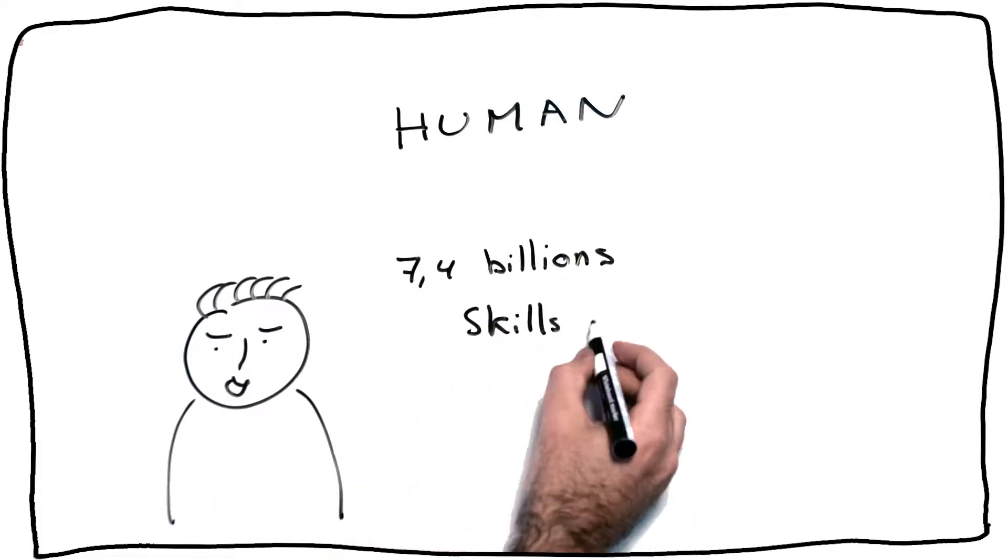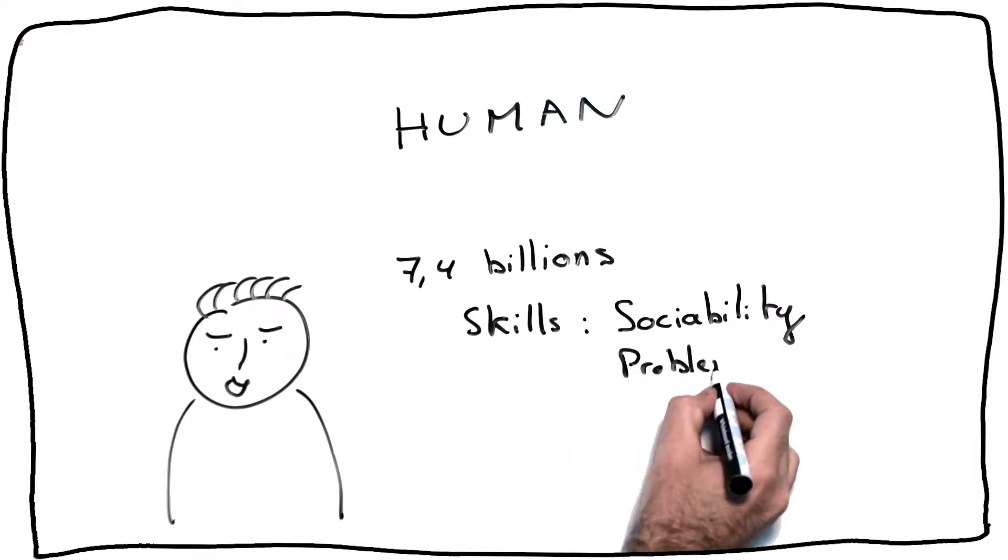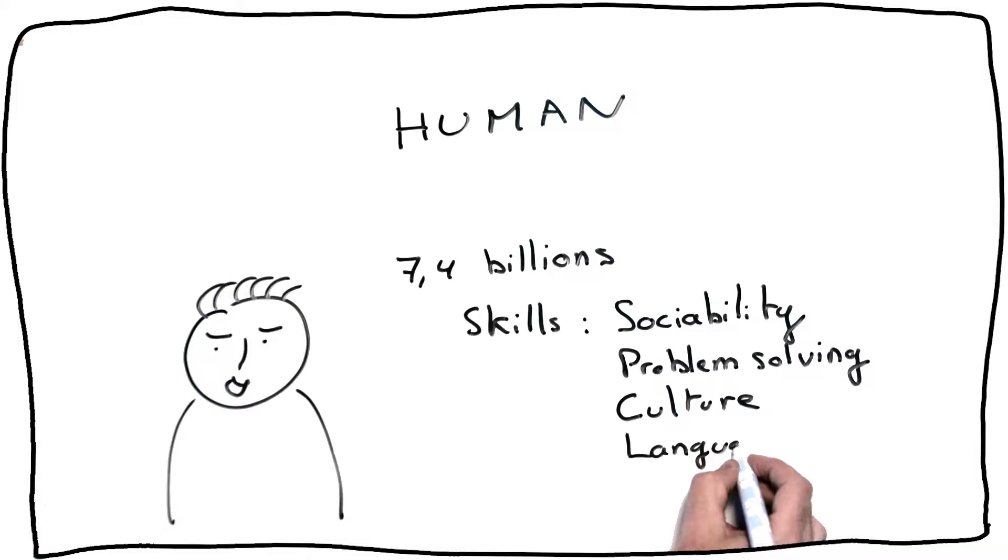Humans can be distinguished from other animals by a combination of typical skills, such as sociability, problem-solving, culture, language and technology.